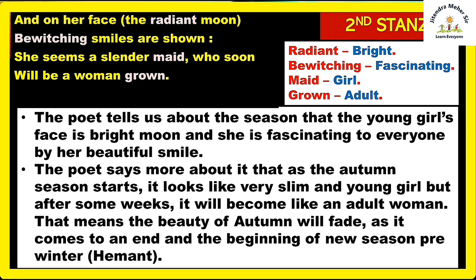Last lines: 'She seems a slender maid, who soon will be a woman grown.' Maid here means a girl; grown means becoming an adult. The poet says the autumn season at its start looks like a very slim and young beautiful girl, but after some weeks it will become like an adult woman. This is nature's rule — what is young today will become adult later — meaning the beauty of autumn will fade as it ends and the new season, pre-winter Hemant, begins.